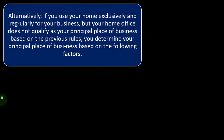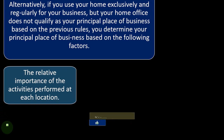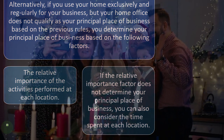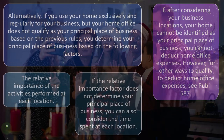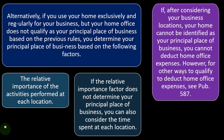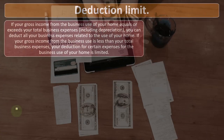Alternatively, if you use your home exclusively and regularly for your business but your home office does not qualify as your principal place of business based on the previous rules, you determine your principal place of business based on: the relative importance of the activities performed at each location, and if that doesn't determine it, the time spent at each location. If your home still cannot be identified as your principal place of business, you cannot deduct home office expenses — though see Publication 587 for other ways to qualify.